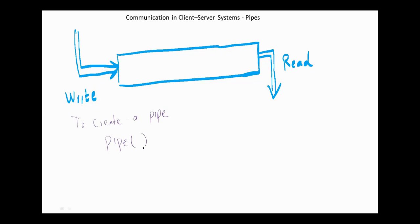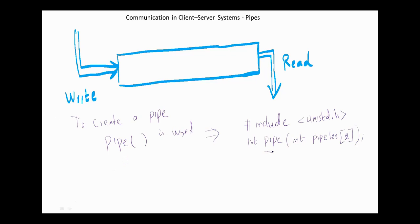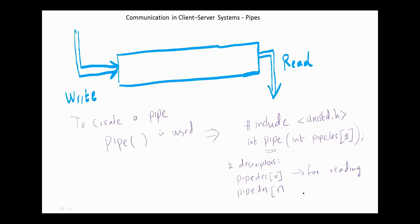To create a pipe, the system call pipe() is used. For example, pipe(fd) with an array of two. The system call creates two descriptors: fd[0] for reading and fd[1] for writing. Whatever is written into fd[1] can be read from fd[0]. The system call returns minus one on failure.